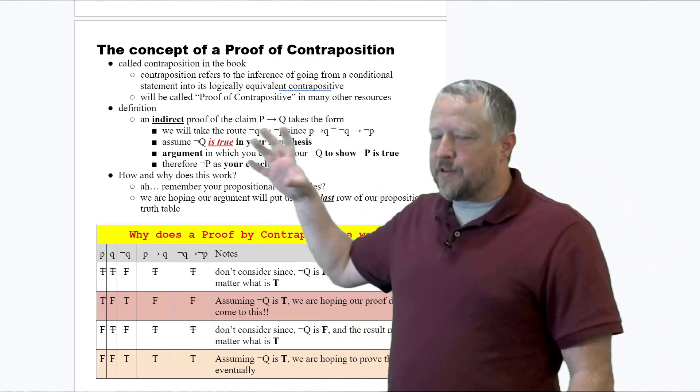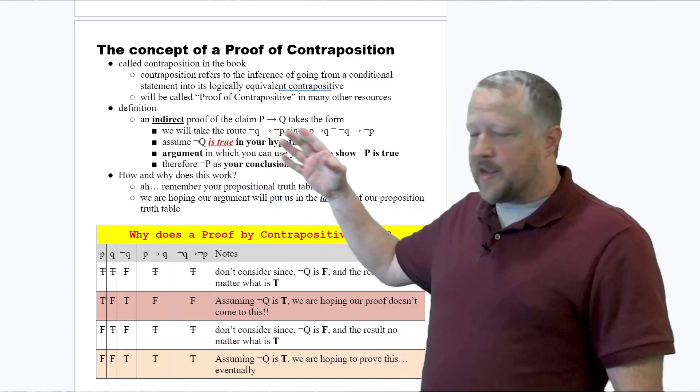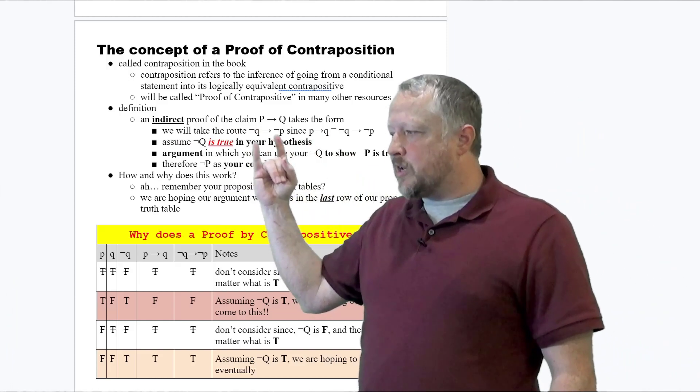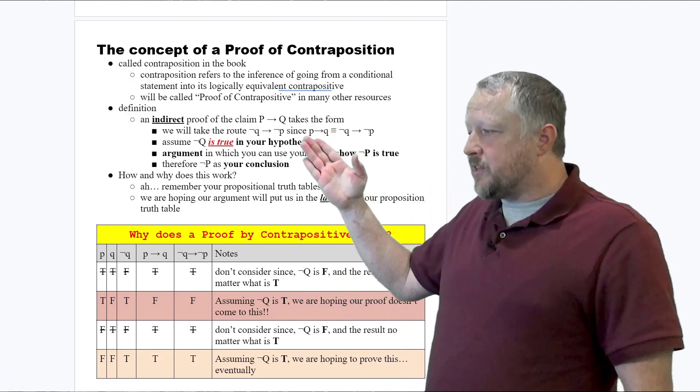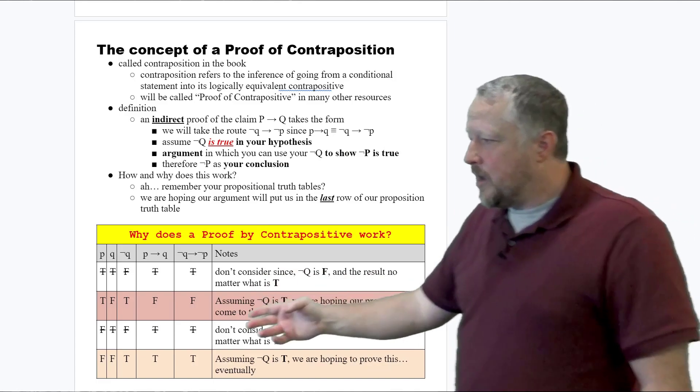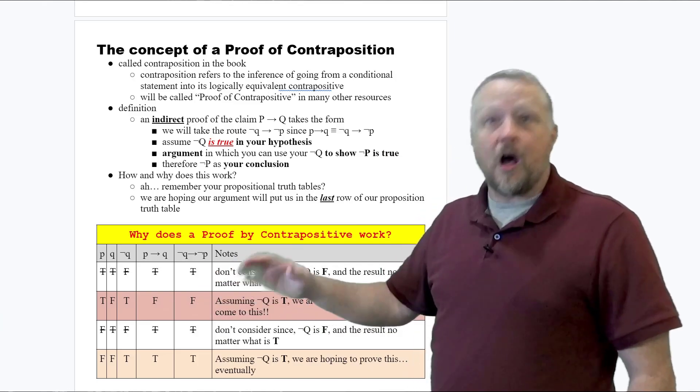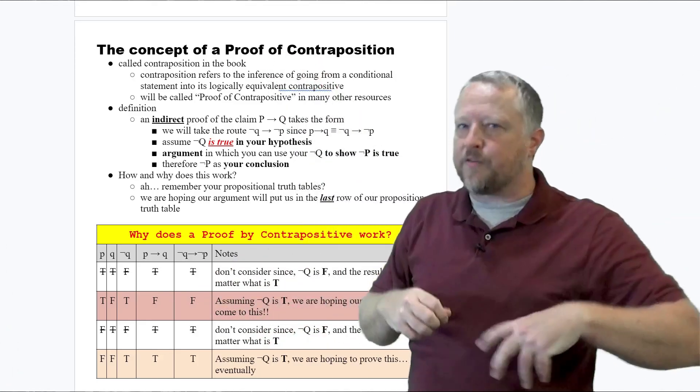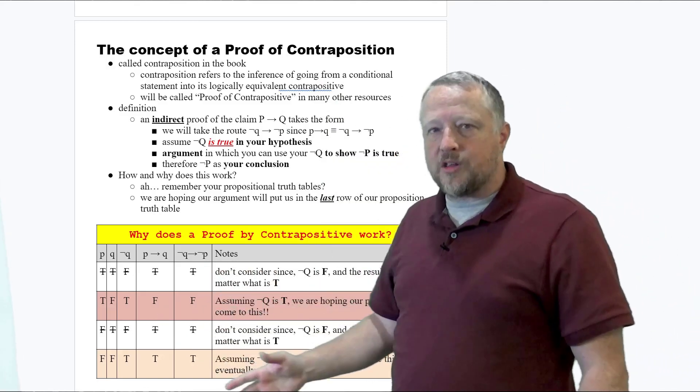The definition of this is it's an indirect proof of the same claim that we want, but here's the thing. The form of it is actually going to be a little bit different. We're going to take a different route to prove basically the same thing. P implies Q equals the contrapositive. Here's another item we're pulling from material we've learned before. It's the exact same setup when it comes to the values.